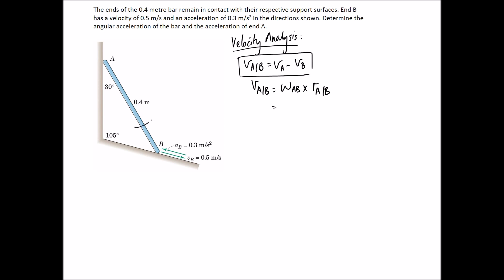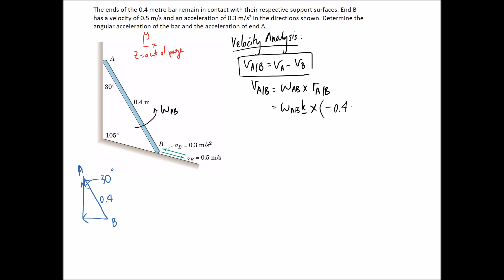Substituting into this equation, I'm going to assume that omega AB is going in the positive direction using the regular coordinate system. That becomes omega AB with a K because it's rotating about the Z axis. Taking out the triangle, we know it has a 30 degree angle and a 0.4 metre hypotenuse. For A relative to B, the vector goes in the negative X direction with length 0.4 sine 30, giving negative 0.2i, and in the positive Y direction 0.4 cos 30j.